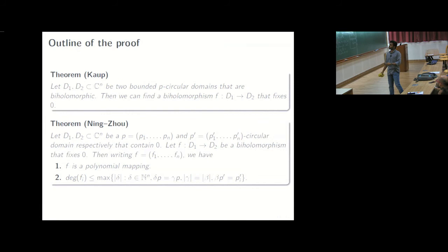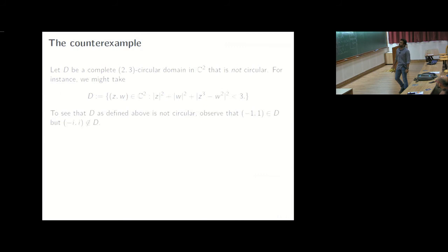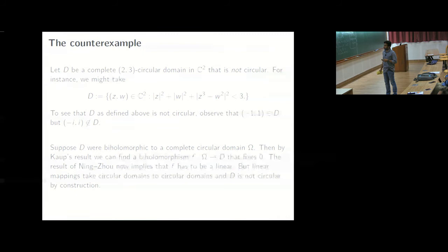With this we consider the following domain. The domain is basically zw which is satisfying this defining equation, mod z square plus mod w square plus mod z cube plus w square the whole square less than three. And this is a simple check, we can check that minus one one is here and minus i doesn't belong there, it's not a complete circular domain in particular. And if it were to be a domain which is biholomorphic to a complete circular domain, then let's call that function f, the biholomorphism f, from a complete circular domain omega to d, which fixes zero...